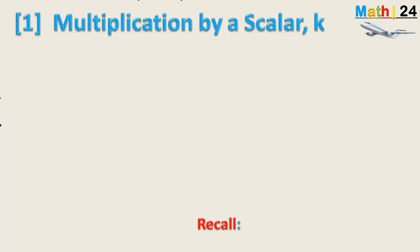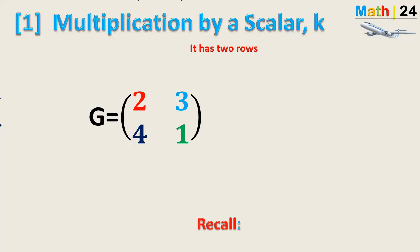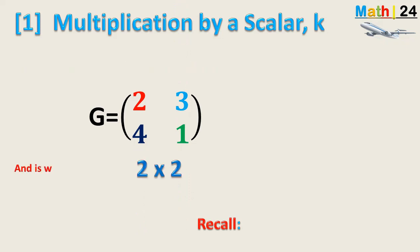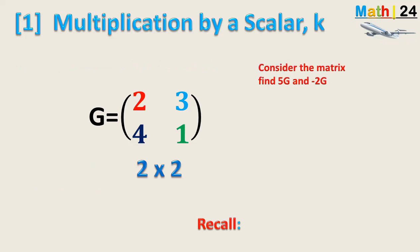Let us consider the matrix shown below, G, having elements or entries: 2, 3, 4, 1. This matrix has two rows and two columns, so it is a two-rows-by-two-columns matrix. We mention the rows first, then the number of columns, so it is written as a 2×2 matrix, where the first two stands for the number of rows and the second two for the number of columns.